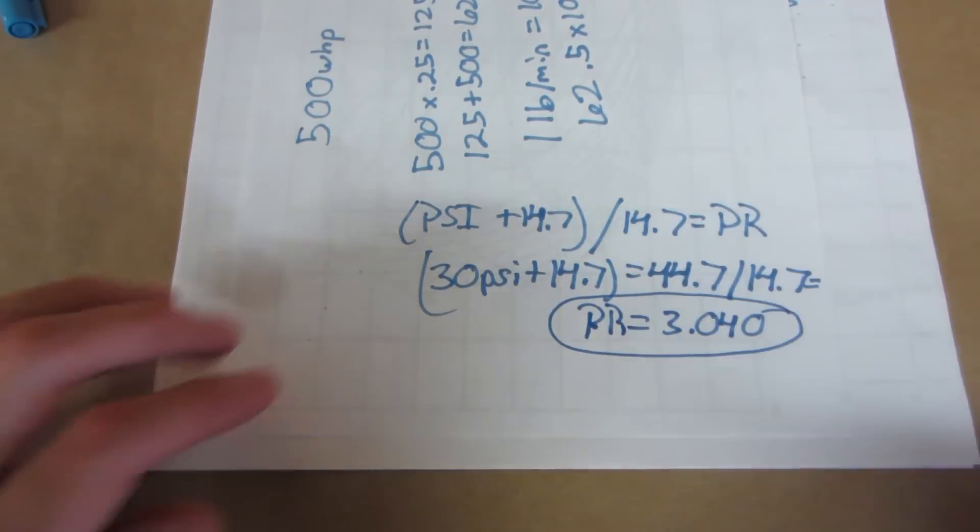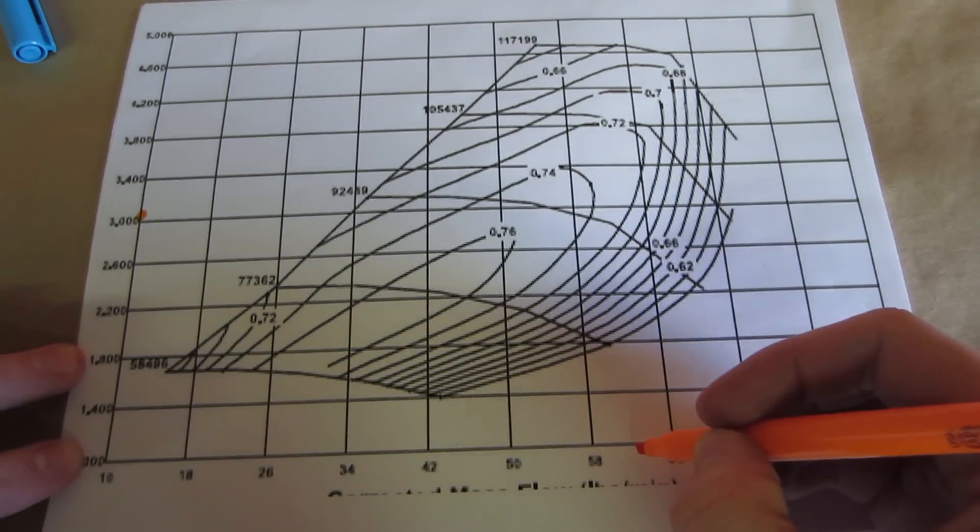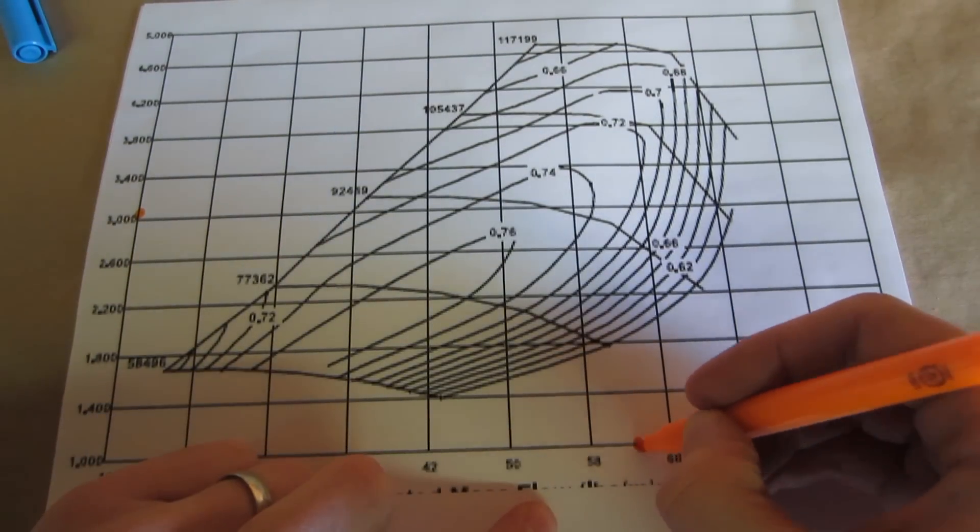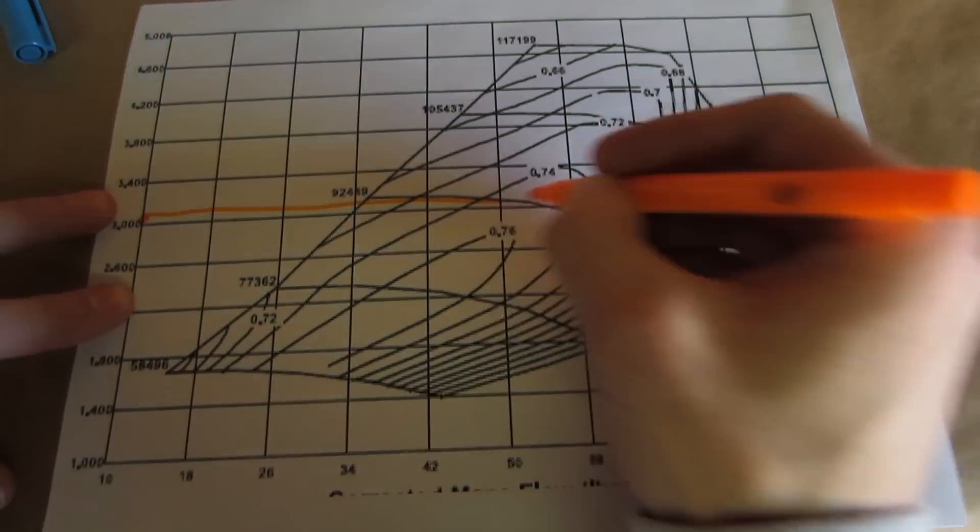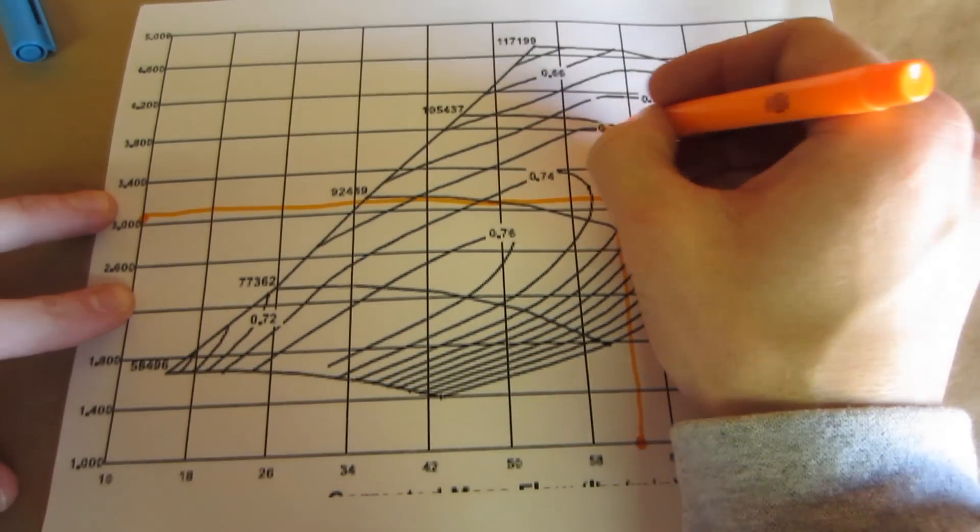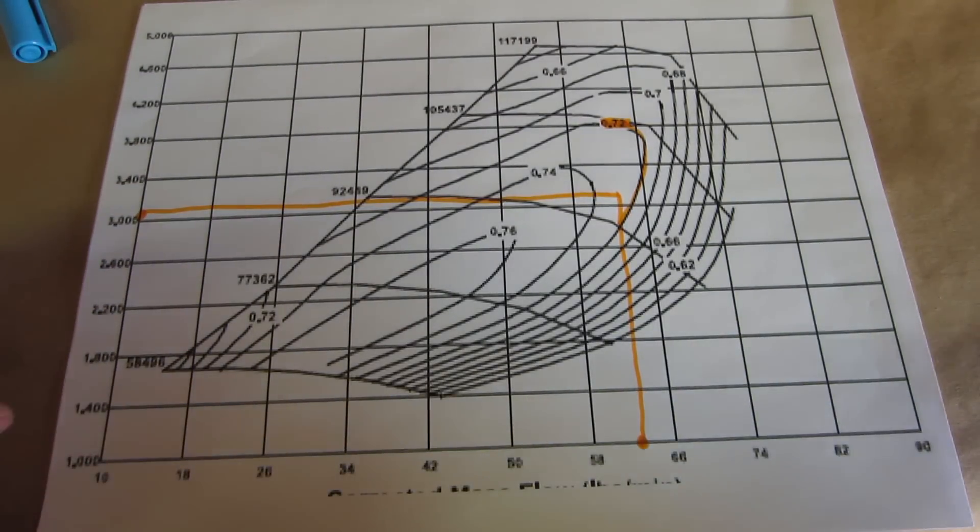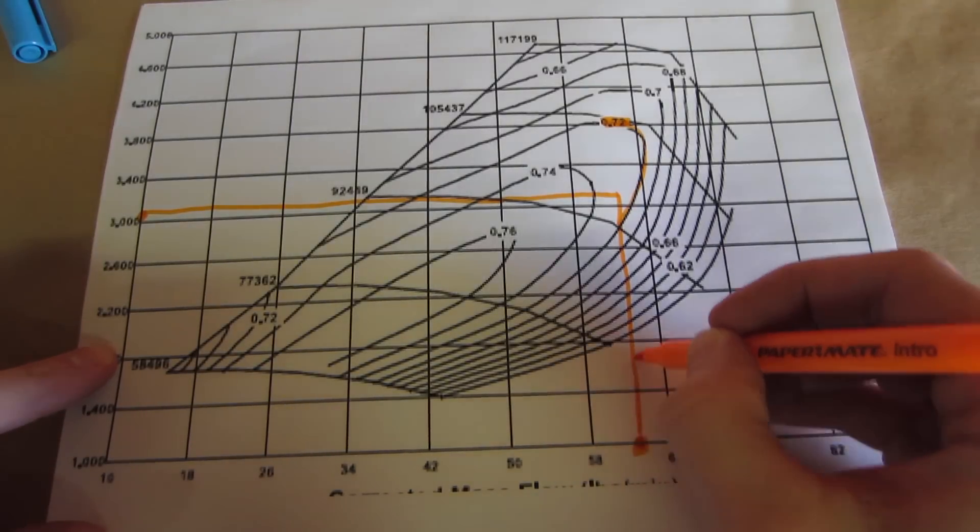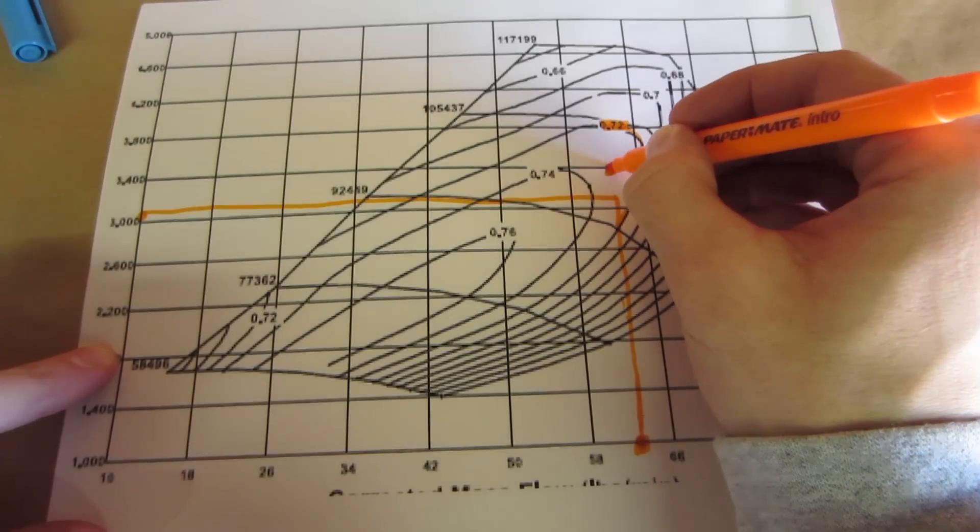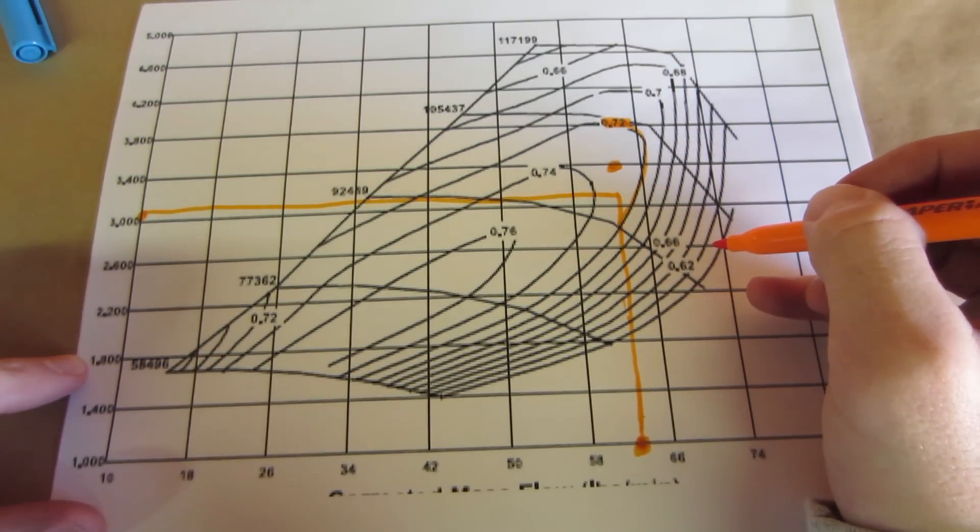So the pressure ratio for 30 psi converts to 3.040. This places you in the .72 island or the 72 percentile. If you do not have a pressure ratio in mind, just take your airflow number for the desired power and follow it up the map until you reach the center of the most efficient island. In this case, that is just inside the 72 percentile island.